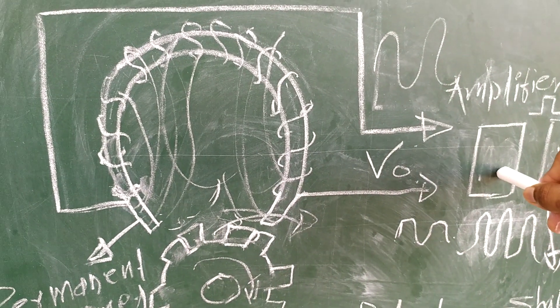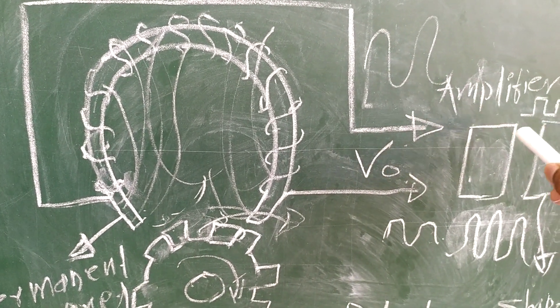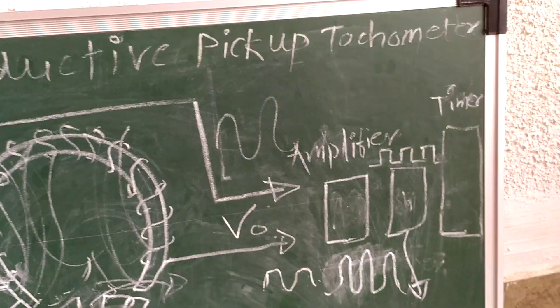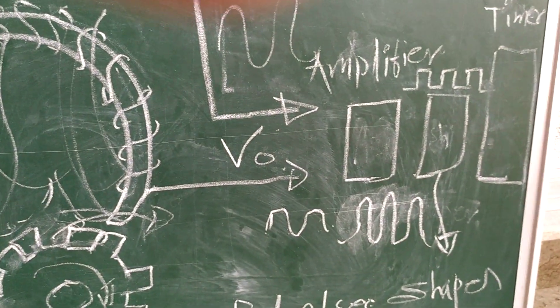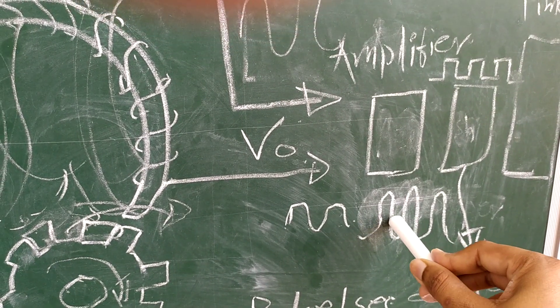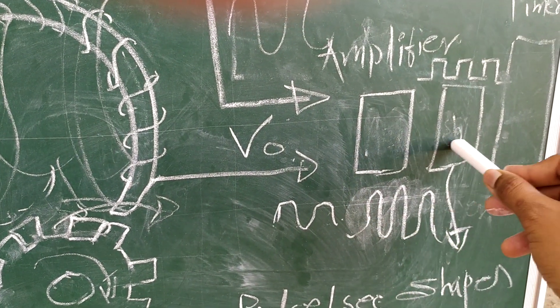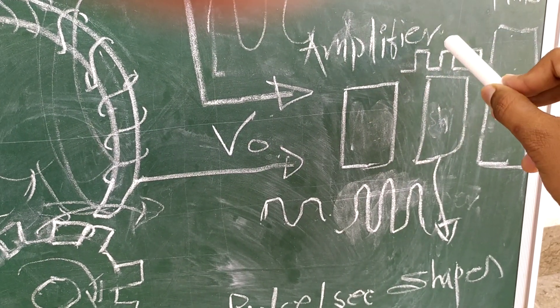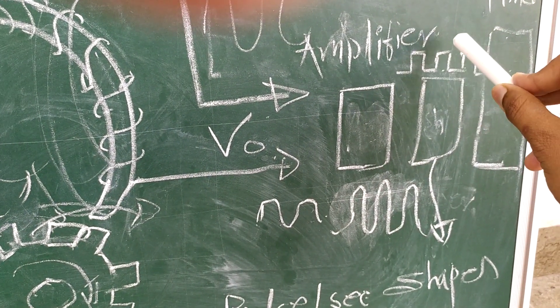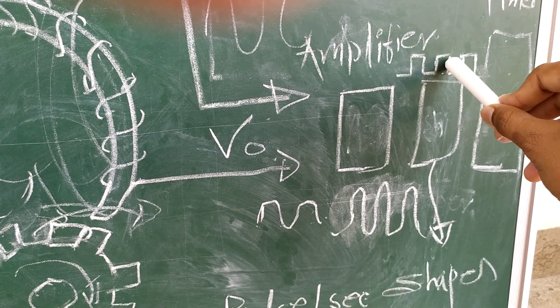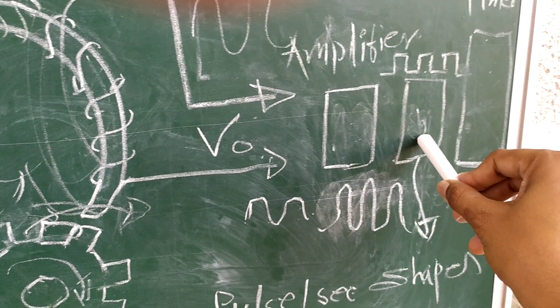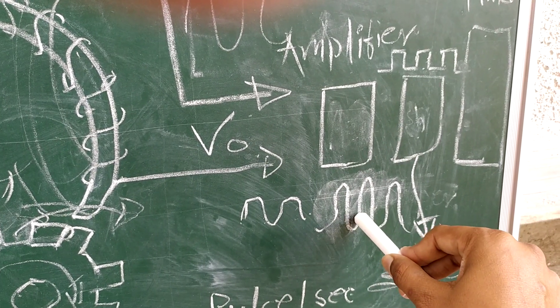What will the amplifier do? It will amplify the sine waves. Now these amplified sine waves are fed to the shaper because the frequency timer accepts square waves. That's why the amplifier sends to the shaper this amplified sine wave, and it gets converted into square-shaped amplified waves.